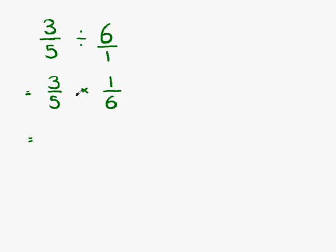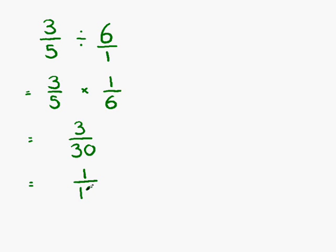Three times one gives us three on our numerator, and five times six gives us thirty on the denominator. This isn't our final answer, because we can simplify. Three goes into both three and thirty. Three goes into three once, and three goes into thirty ten times. So our final answer is one-tenth.